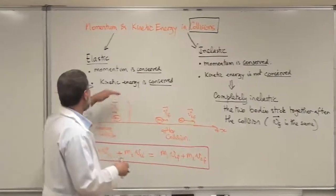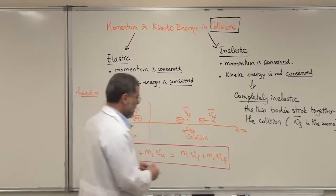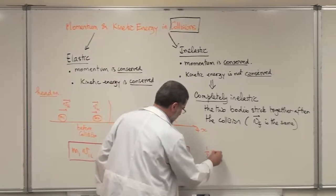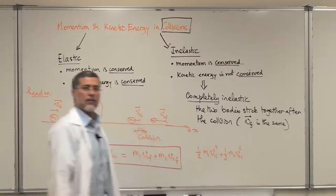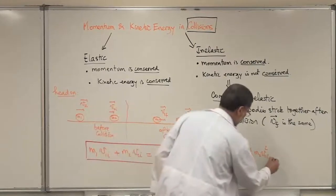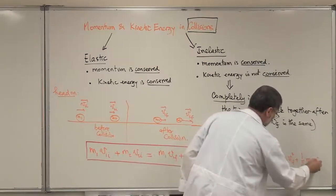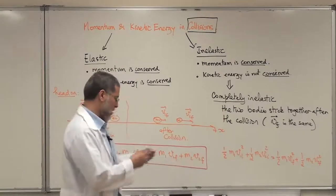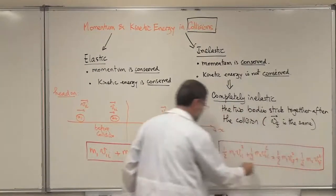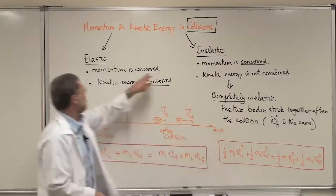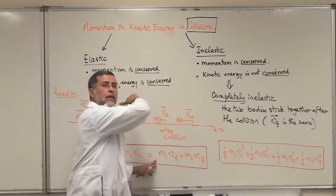If the collision is elastic, then you also write the conservation of kinetic energy. That equation is: ½·M1·V1_initial² + ½·M2·V2_initial² = ½·M1·V1_final² + ½·M2·V2_final². Be very careful — this is a scalar equation, it doesn't have direction. You write it only for elastic collision, whereas the momentum equation is valid for both elastic and inelastic.